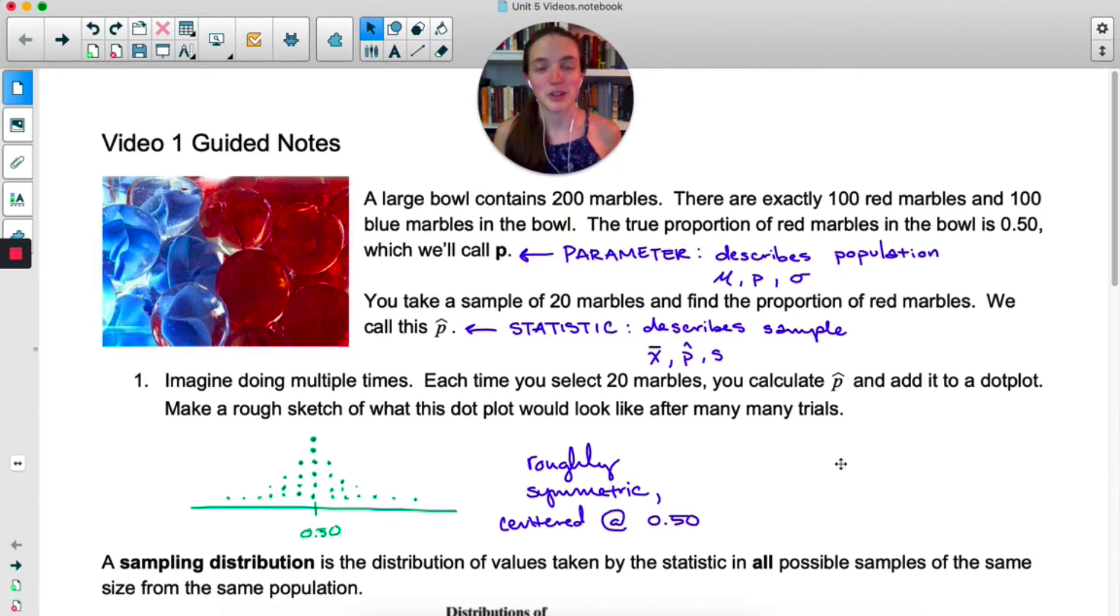Probably your dot plot is going to be centered around 0.5 because most of the time you will get a p hat around 0.5 or 50 percent. Sometimes you might get a particular sample that has more red or less red, but most of the time you'll be close to 0.5. I would also say that this is going to be roughly symmetric because you're mostly getting close to 50 percent.